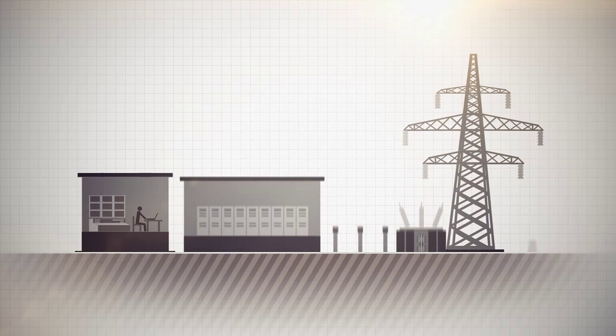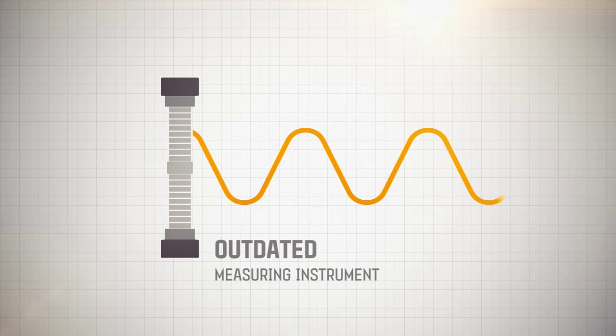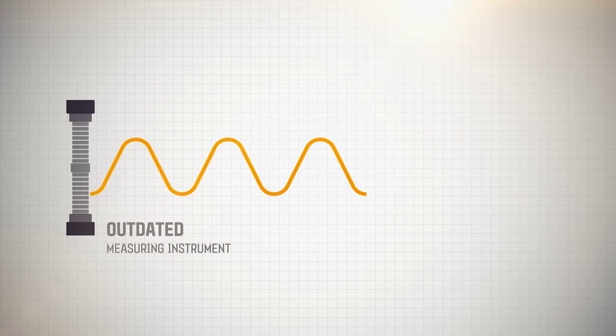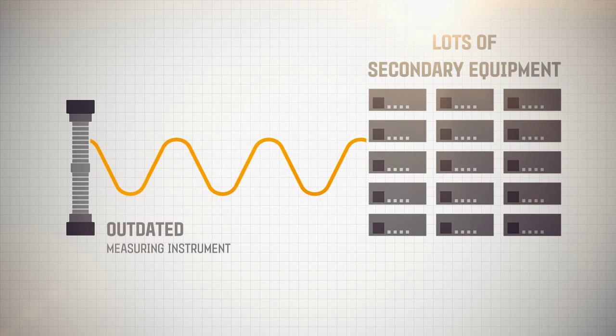Many of the existing substations are equipped with obsolete equipment which needs to be updated. This explains why most of the currently used control systems still require a great deal of secondary equipment for the processing of data received from antiquated measurement transformers.